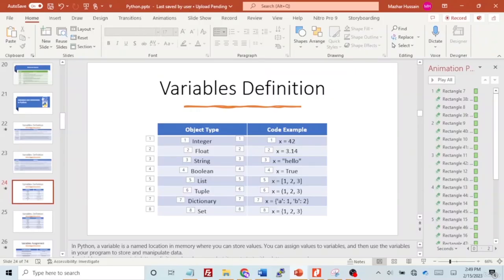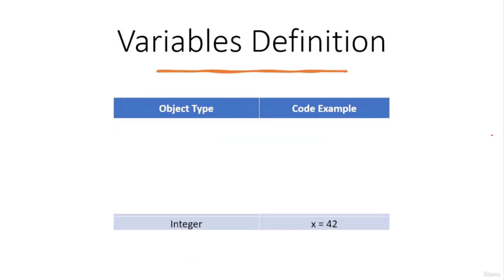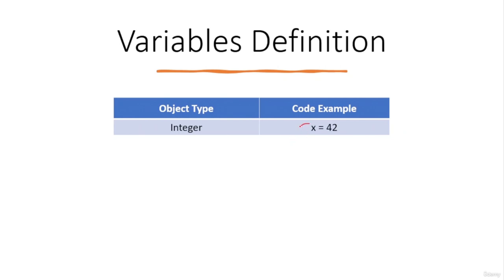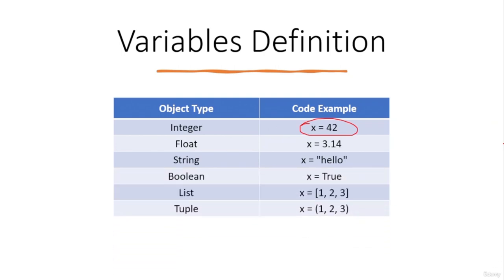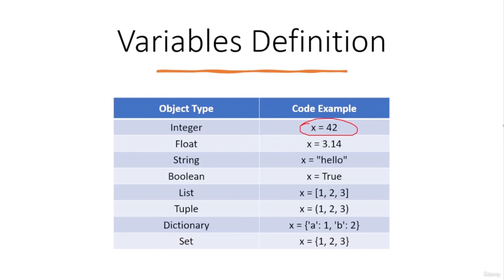Variables do not have a fixed type and can store values of different types at different points in the program. You can define different types of variables in Python. For example: an integer variable x = 42 — note we didn't mention the data type because Python is dynamically typed. Similarly, you can define float, string, boolean, list, tuple, dictionary, and set variables without explicitly specifying the data type.